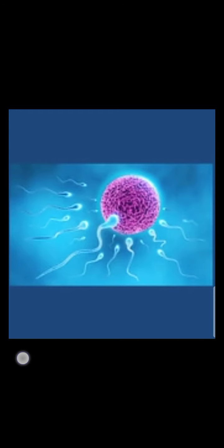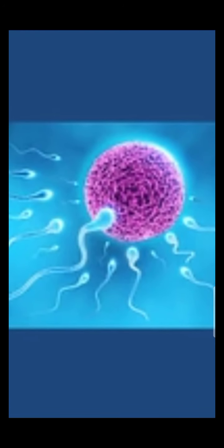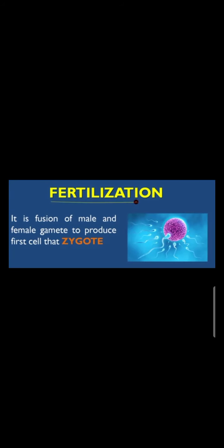The fertilized egg forms through the process known as fertilization, and from the zygote an embryo develops. Here you can see the egg in the center, shown in pink color, surrounded by different sperm. So fertilization is the fusion of male and female gametes to produce the first cell, the zygote, and this fertilization results in the formation of a new generation.